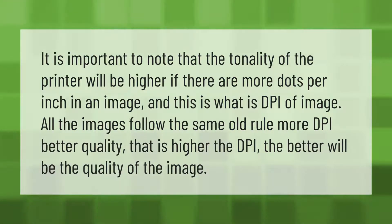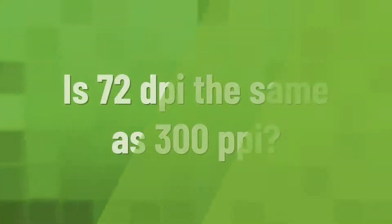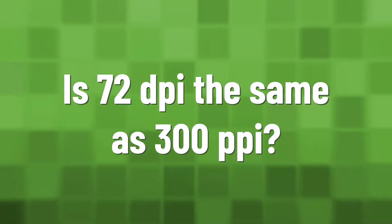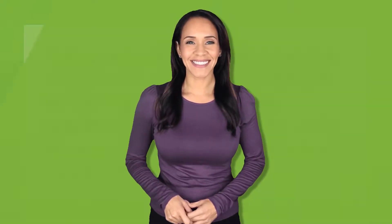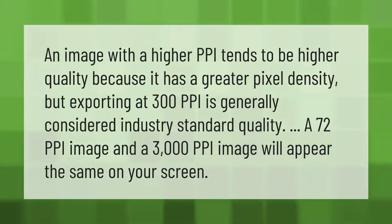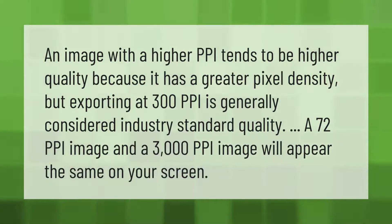An image with a higher PPI tends to be higher quality because it has a greater pixel density. Exporting at 300 PPI is generally considered industry standard quality. However, a 72 PPI image and a 300 PPI image will appear the same on your screen.